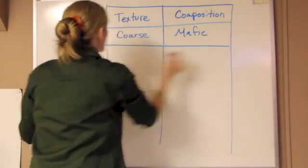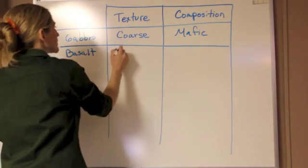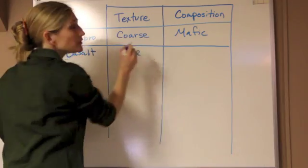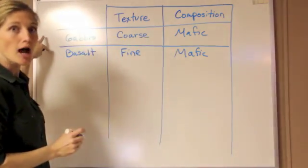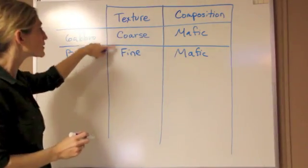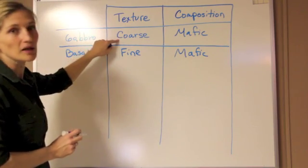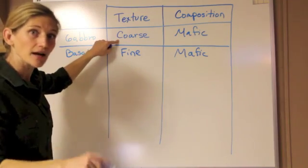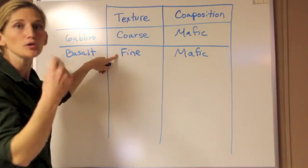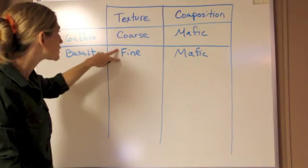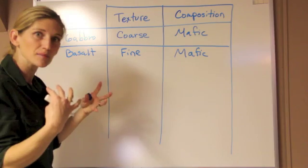If we compare that to basalt, it's going to be fine-grained, or aphanitic, and it's also mafic. These two rocks are complements. The only difference is that one is coarse-grained and one is fine-grained. That's because gabbro is forming slowly at depth inside the crust, while basalt is cooling much more rapidly, closer to the surface or even exposed at the surface. It's cooling so fast that the mineral grains are all crystallizing at the same time.